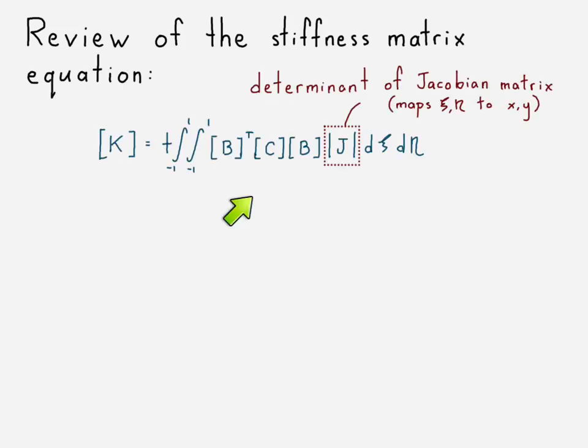Okay, let's go ahead and review the stiffness matrix equation one more time. There it is. First, we start with the determinant of the Jacobian matrix. That's what maps our natural coordinates of xi eta to the global coordinates x, y.